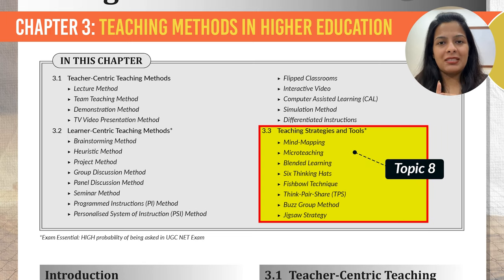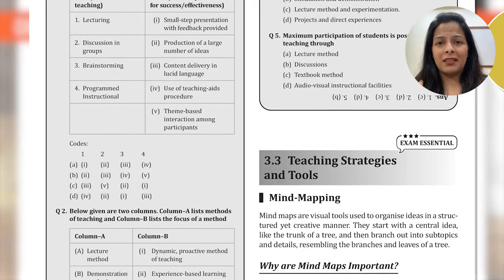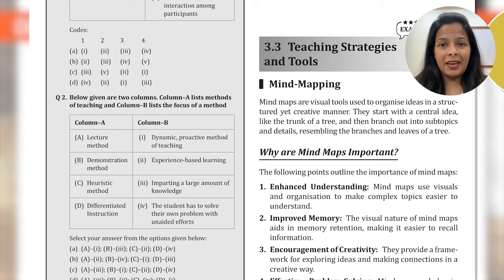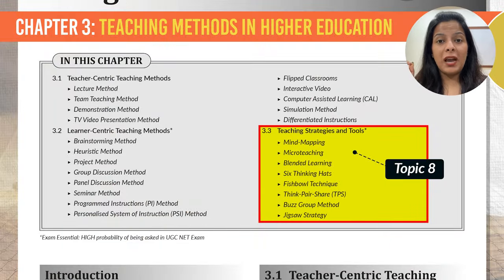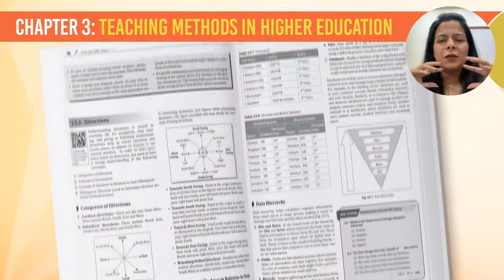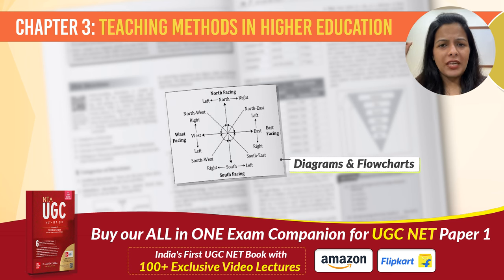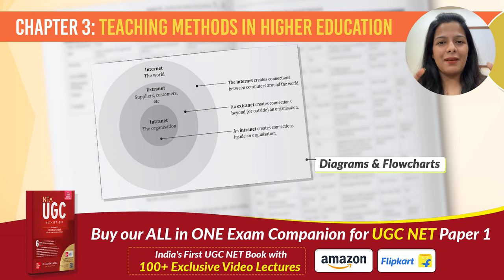Number two is teaching strategies and tools — another exam essential topic. This includes key methods like six thinking hats, the fishbowl technique, think-pair-share, buzz group method, and zigzag strategy. You should be well aware of all these strategies. To make these methods easier to learn and remember, we have added plenty of images and diagrams in our UGC Net Paper 1 book. These visual aids will help you recall these concepts very quickly during the exam.